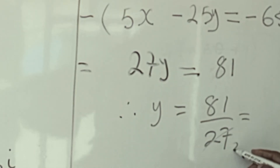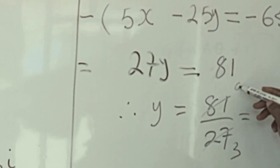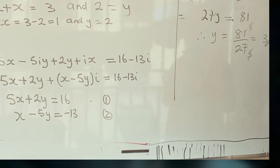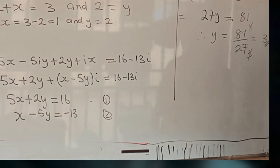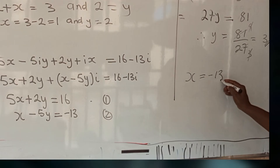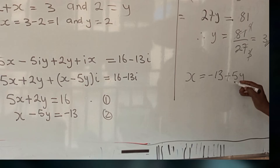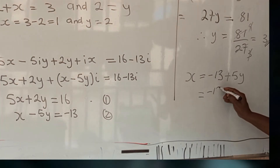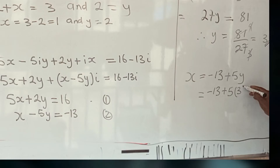Therefore y is equal to 81 over 27, which equals 3. Now substitute the value of y into equation 2: x minus 5y equals minus 13. Making x the subject, x is equal to minus 13 plus 5y. Substituting y equals 3, we have minus 13 plus 5 times 3, which is minus 13 plus 15.